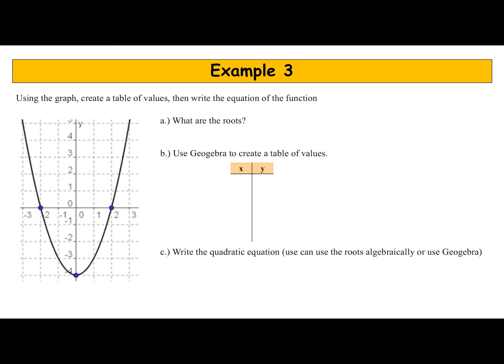One more for today and then we're done. Using the graph, create a table of values then write the equation of the function. So instead of a table, it gives you a graph, which actually makes things easier. Part a says what are the roots? I can just look at the graph. The roots are where the parabola crosses the x-axis, so I have x equals negative 2 and x equals 2.